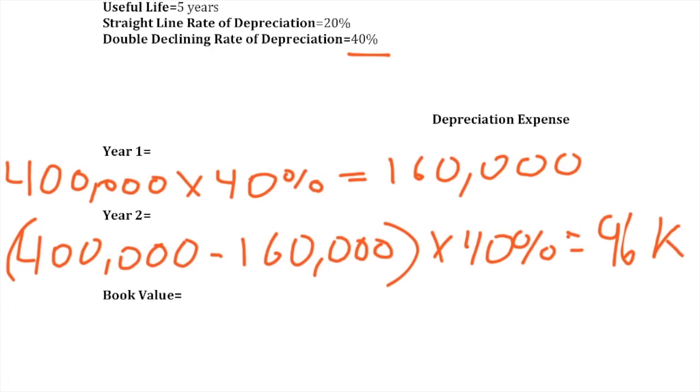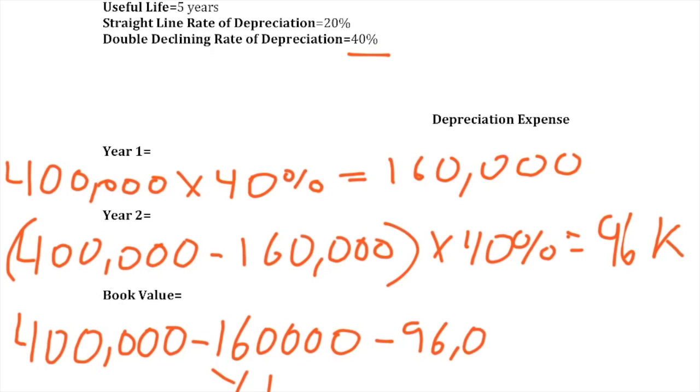The book value is simply going to be $400,000 minus $160,000, and that is going to be year 1 minus $96,000, and that is going to give us $144,000.